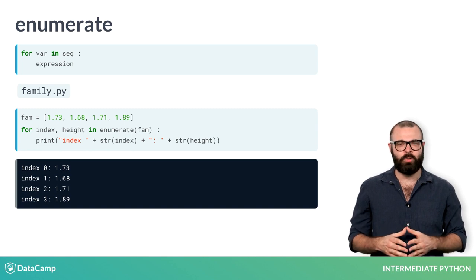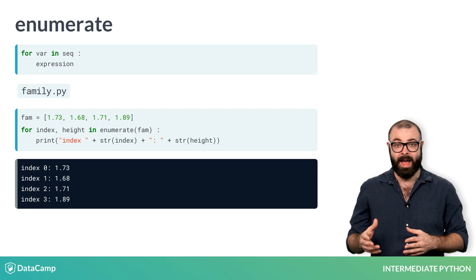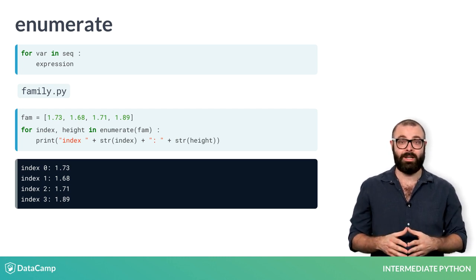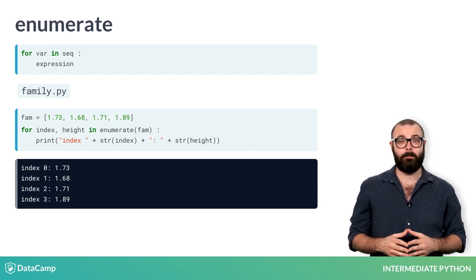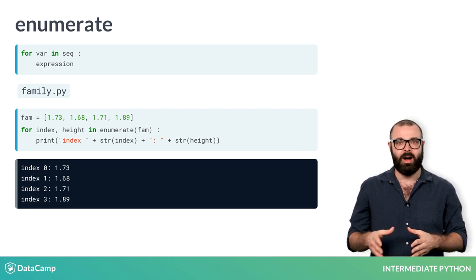Let's update the for loop definition like this. Now, enumerate.fam produces two values on each iteration: the index of the value, and the value itself. Instead of a single variable height, you now write index, height.